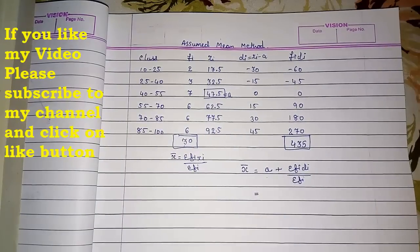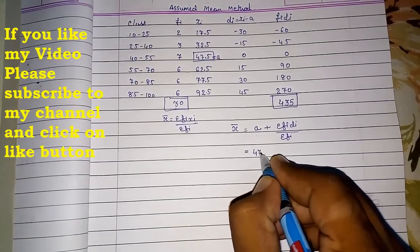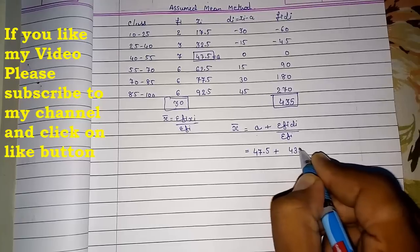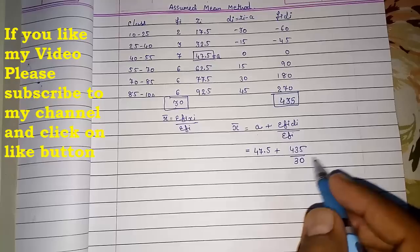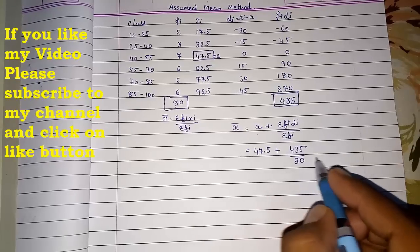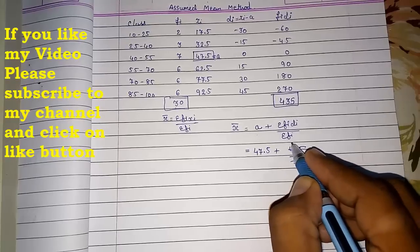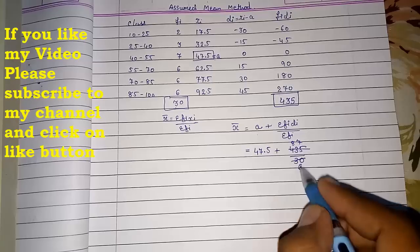So directly we will keep the value. a is 47.5 plus 435 by 30. We can divide it. What we will get? So it's 3, 5, 6, and 5, 8, 40, 87. I think the answer will come in decimal, so it's 47.5.